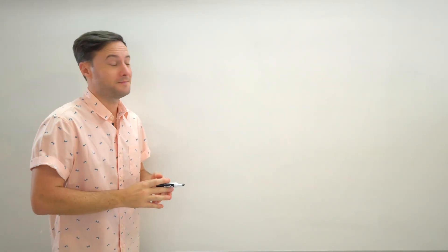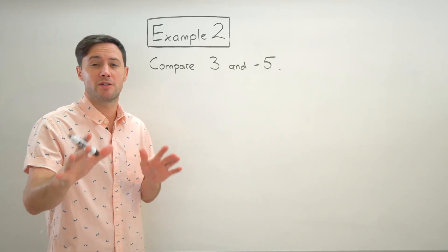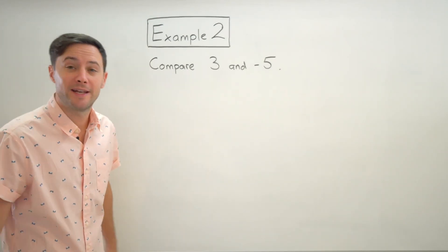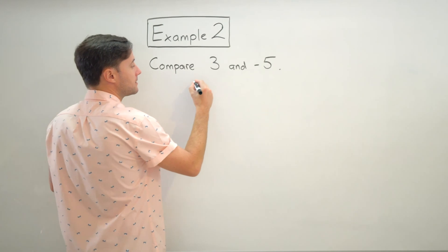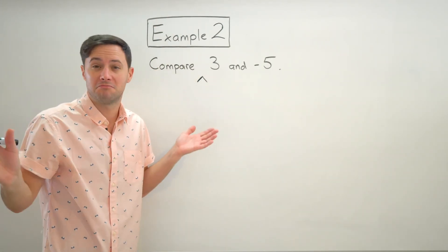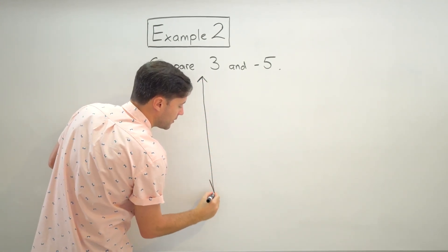Okay. We're comparing two numbers again, but this time I'm going to draw a vertical number line just to show you kind of how that looks a little bit different. So we're comparing three and negative five, same thing. We need arrows again, but this time I'm drawing it vertical, which really doesn't change much. So I'm going to draw my vertical number line.